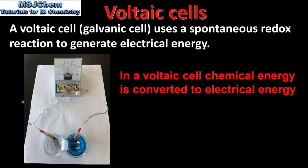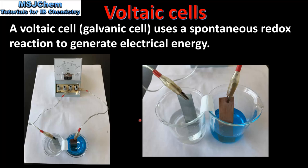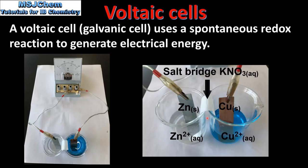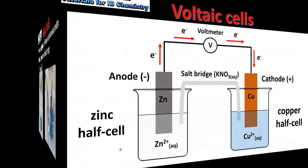Here on the left we can see an image of a Voltaic cell. This Voltaic cell is composed of two half cells, a salt bridge, and an external circuit which contains a voltmeter. Here we can see a close up of the two half cells. On the left we have a zinc half cell and on the right we have a copper half cell. The zinc half cell is composed of a zinc electrode in a solution of zinc ions, and the copper half cell is composed of a copper electrode in a solution of copper ions. The two half cells are joined by a salt bridge, which is composed of a piece of filter paper soaked in aqueous potassium nitrate.